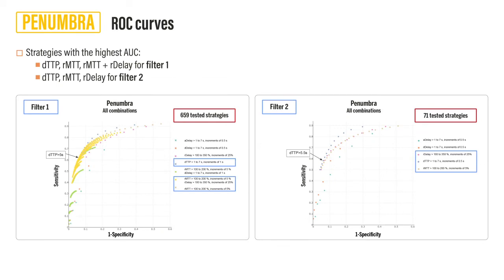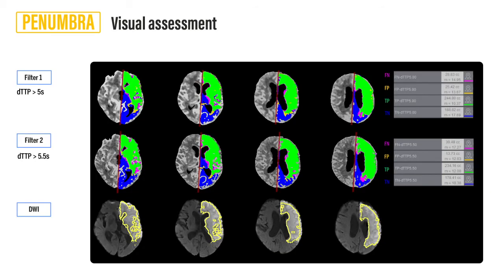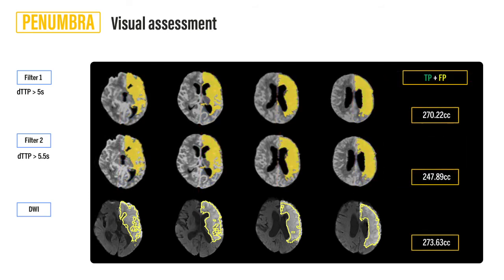Penumbra determination underwent a similar statistical analysis. ROC curves were used and weighted sensitivity was then performed, followed by a visual assessment. The results are seen with the actual output of the CT perfusion software, showing the identified penumbra — both true positive and false positive — as compared with the result on the DWI. Best determined parameters and thresholds for the smooth filter was difference in time to peak greater than five seconds, and for the higher spatial resolution filter, DTTP greater than 5.5 seconds.